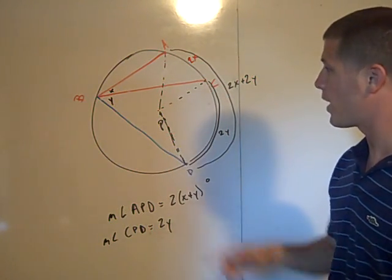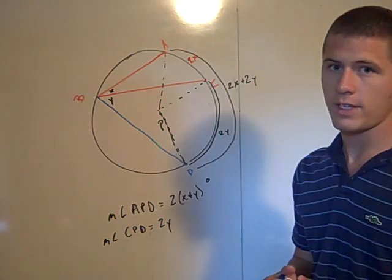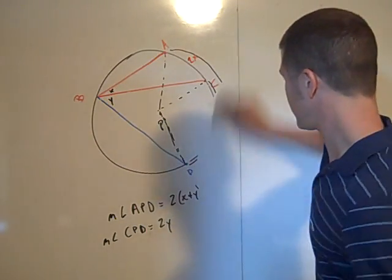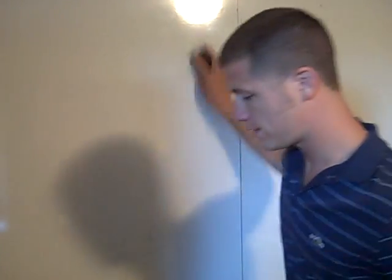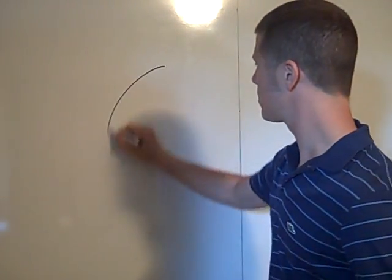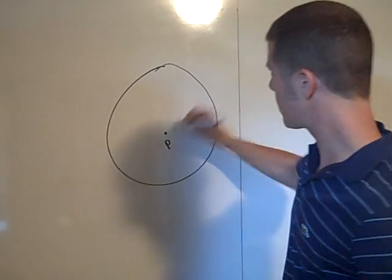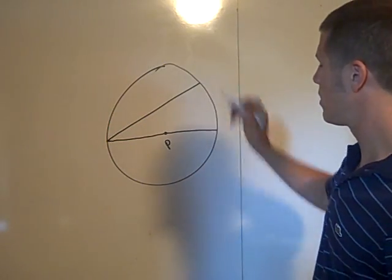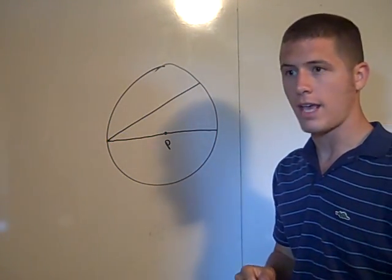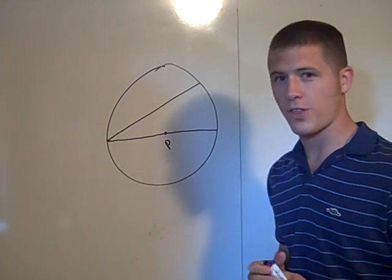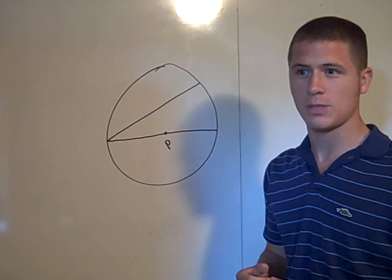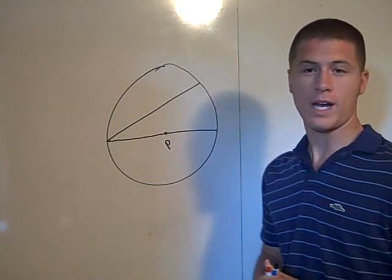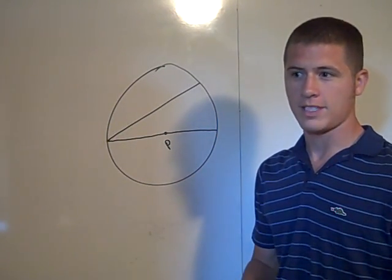So we've shown the theorem holds when the center is in the interior of the angle, and when the center is in the exterior. The last case is when the center of the circle actually lies on the inscribed angle itself. I'll let you work through that one — from seeing the first two cases, it should be relatively straightforward. I hope this helped explain why the measure of an inscribed angle is half that of its intercepted arc.